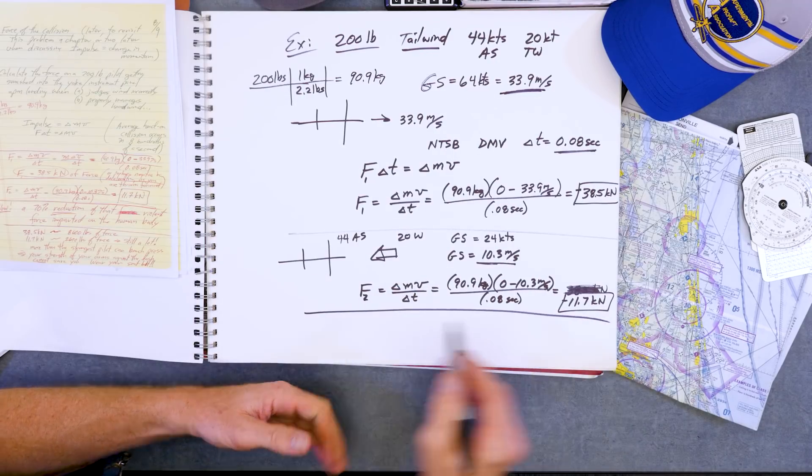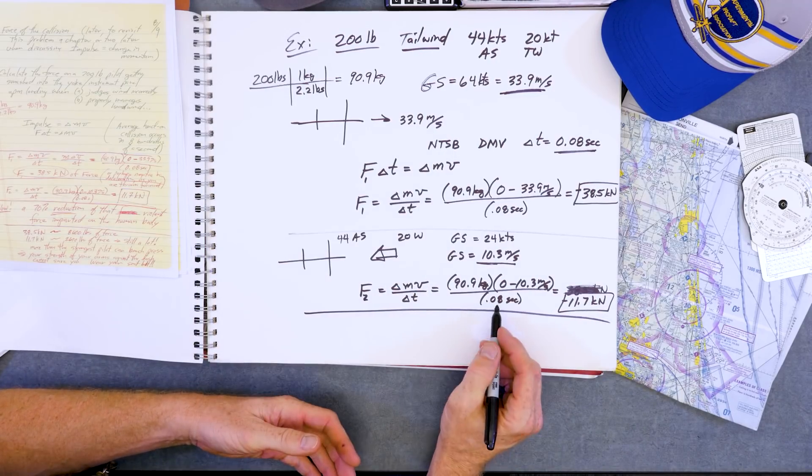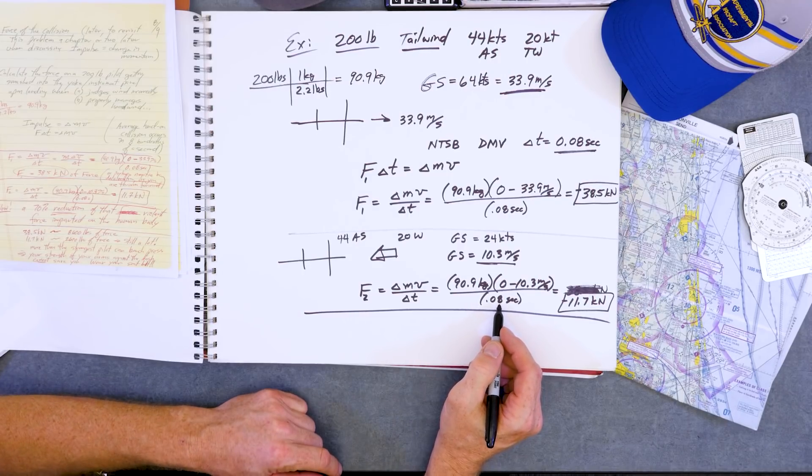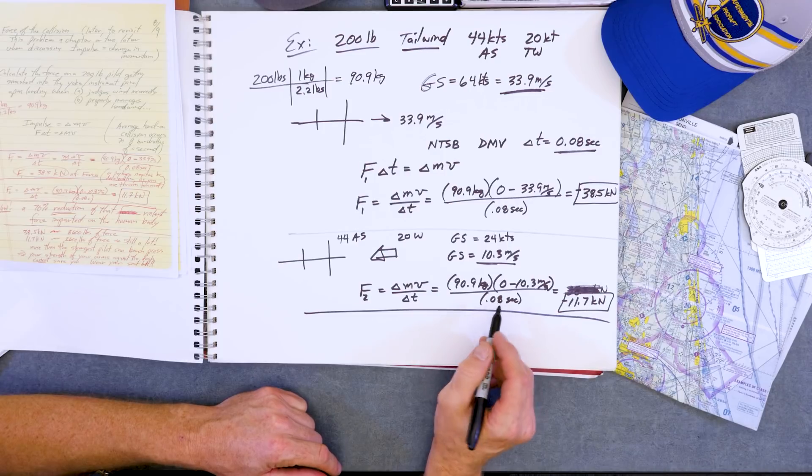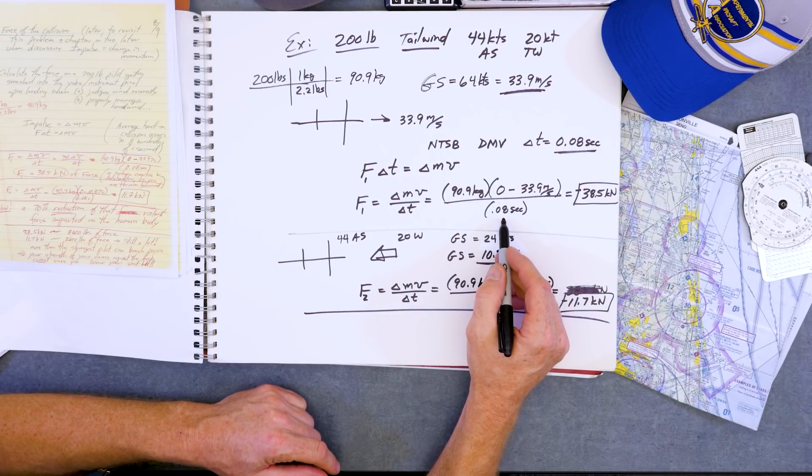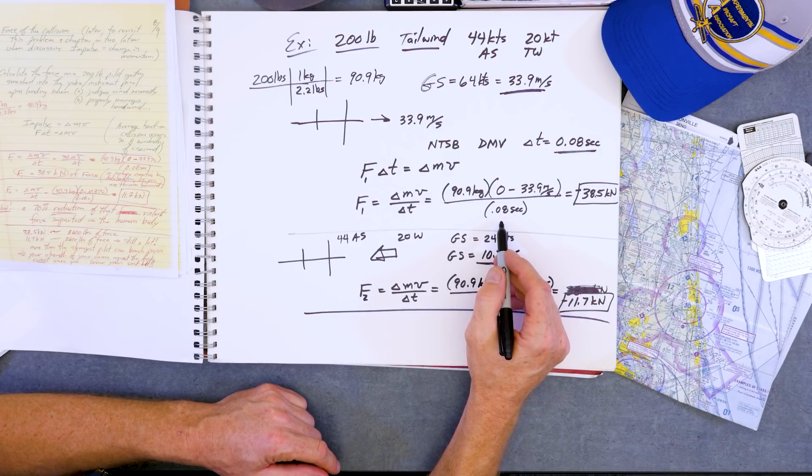Now, the other variable that we'll do in our next video clip here, we can tweak this 0.08 seconds, and we need to do some research and look at some NTSB reports, because this is an average. Your homework is to look up some NTSB reports and find some range, or look at DMV articles, or do some physics from scratch.